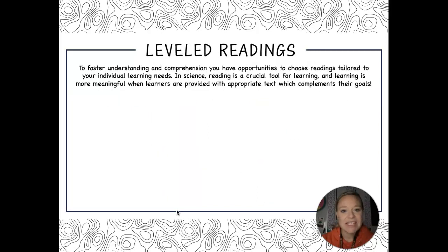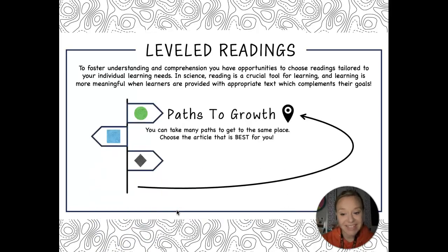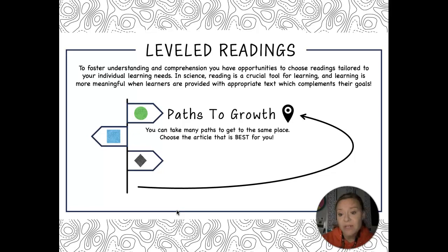Some things that students can think about: they have the option to do leveled readers. In science we are reading to learn and not learning to read, and it's important that we understand the text and it's appropriate for us. Students have the option to pick a reader at a level that works for them. I have one-on-one conversations with students when I think they've gone too fast or need something more challenging, or when they may need to slow down. Understanding is really the importance here in our class.